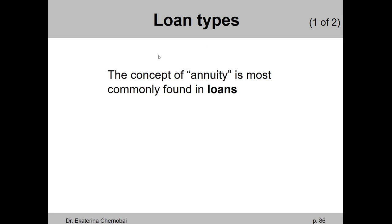Different loan types. It came up a few times throughout Chapter 6 that when we deal with loans — when you borrow money, let's say to buy a house or a car — the loan amount should be viewed as nothing but the present value of all future payments that you will be making back to your lender. And because all payments are identical, this is nothing but an annuity. So any loan is the present value of an annuity of loan payments.